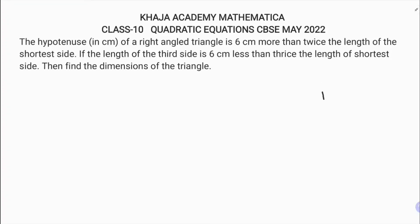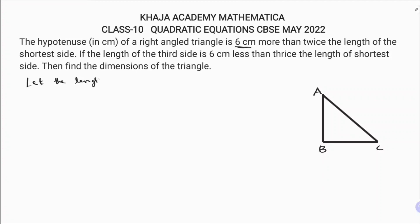This problem is based on a right angle triangle. So first I will take a right angle triangle ABC. Let the length of the shortest side BC be x centimeters.